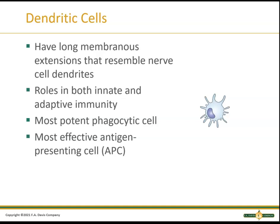Dendritic cells look like dendrites of a nerve — long projections sticking off them. They play a huge role in both innate and adaptive immunity. They are the most potent phagocytic cell and the most effective antigen presenting cell — from now on we'll call that an APC. They're actually much better at this than macrophages. We don't see them in tissues very easily, but they are the best APC and phagocytic cell out there.